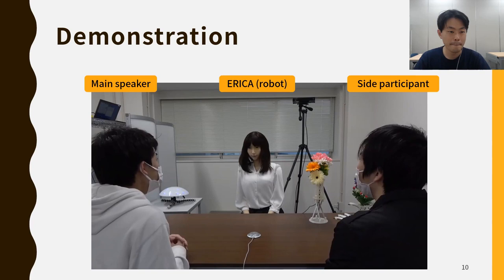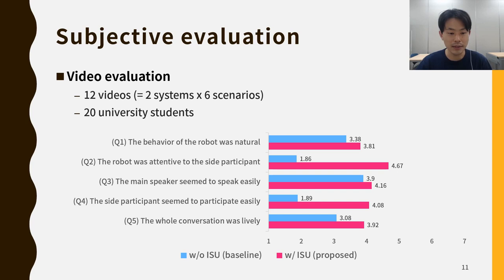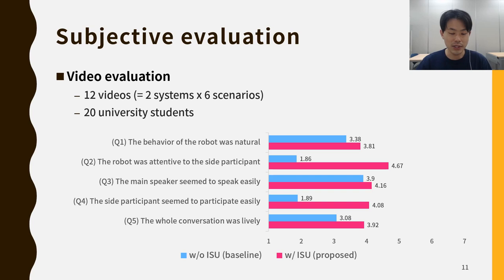We also created dialogue videos and conducted a subjective evaluation. We asked 20 university students to watch the dialogue videos and rate five questions. We compared the proposed system with a baseline system that does not use ISUs, corresponding to the conventional attentive listening system. As a result, the proposed ISUs improved the scores, especially on question 2 — the robot was attentive to the side participant — and question 4 — the side participants seemed to participate easily — and question 5 — the whole conversation was lively.